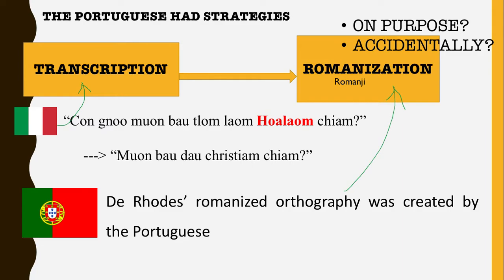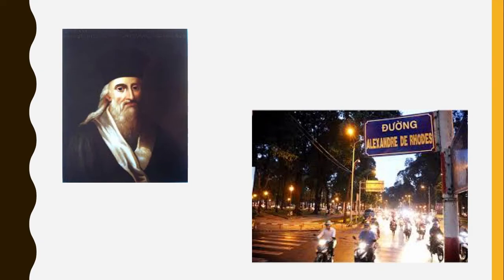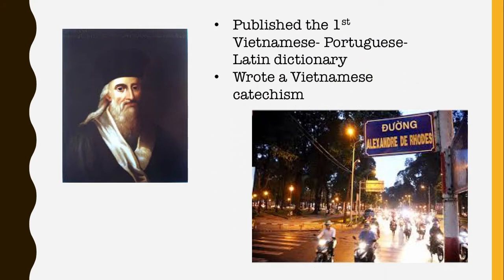In my paper I present evidence that the Portuguese group had a very clear strategy and vision for why they wanted to do this romanization and how they would achieve it. Then we have Alexandre de Rhodes — the French missionary influenced by the Portuguese group — who did two things that later earned him the honor of having a street named after him. I live in Ho Chi Minh City, and in the central district there is a street named after him. The first thing he did was publish the first ever Vietnamese-Portuguese-Latin dictionary.